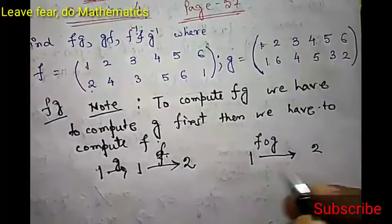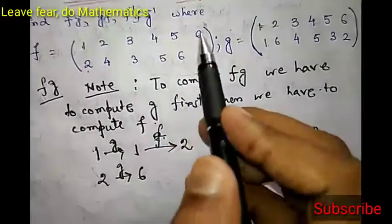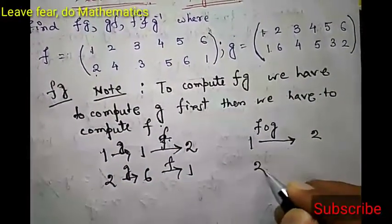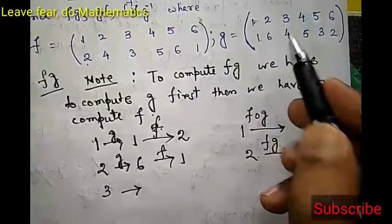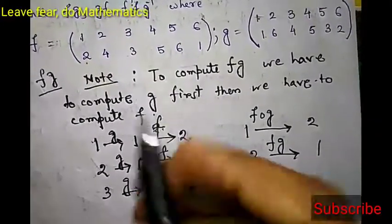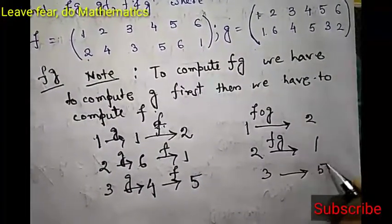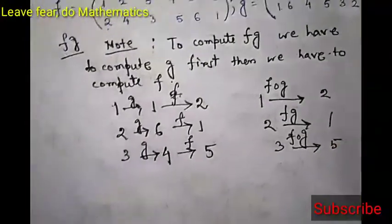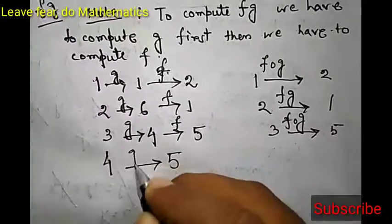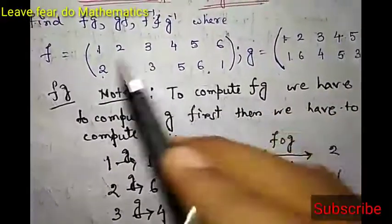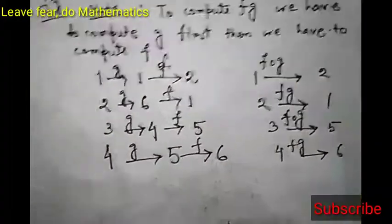So 1 goes to 2 under fg. Now look: 2 goes to 6 under g, and 6 goes to 1 under f, so 2 goes to 1 under fg. Similarly, 3 goes to 4 under g, then 4 goes to 5 under f, so 3 goes to 5 under fg. Then 4 goes to 5 under g, and 5 goes to 6 under f, so 4 goes to 6 under fg.